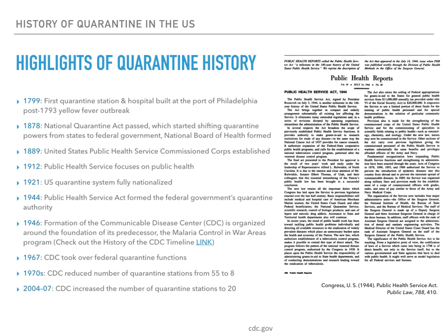Moving forward to the 1970s, the CDC reduced the number of quarantine stations from 55 down to 8. Recall that the prevalent thinking at the time was that due to measures such as vaccines and antibiotics, infectious diseases were thought to be a phenomenon of the past. By 1995, all U.S. ports of entry were covered by only seven quarantine stations. In 2004 to 2007, the number of quarantine stations was increased to 20. Do you recall from last week what was happening around that time regarding pandemic preparedness in the U.S.?